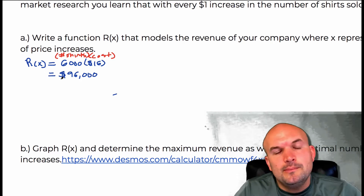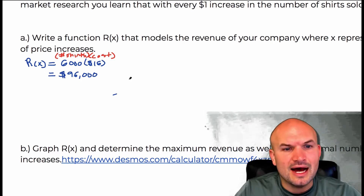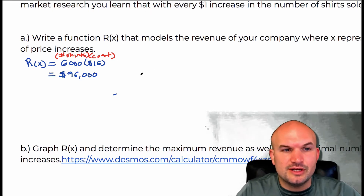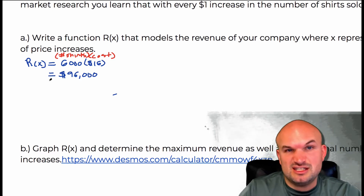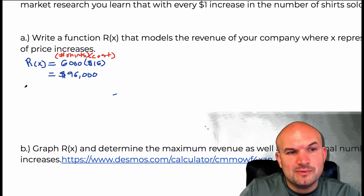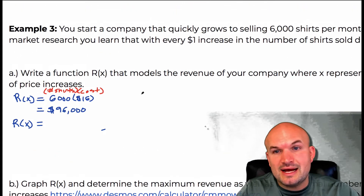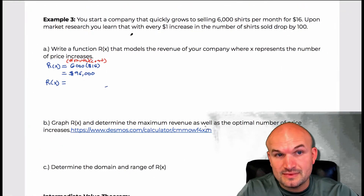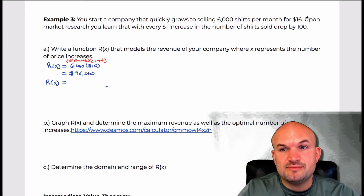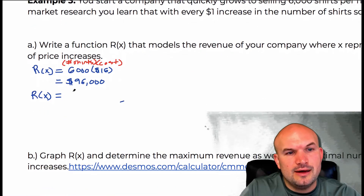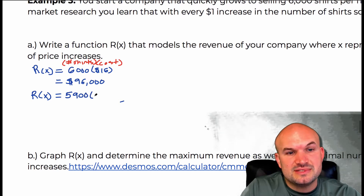That's a good amount, especially for a month of selling. Obviously you have expenses, but for here we're just looking at that. Now let's look at an example. What if I do one price increase? That means, based on this problem, I am now going to be reducing the number sold by 100, but I'm going to increase the price by a dollar. So therefore I would have sold only 5,900 times $17.